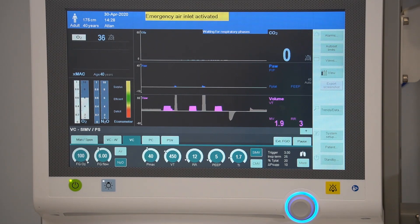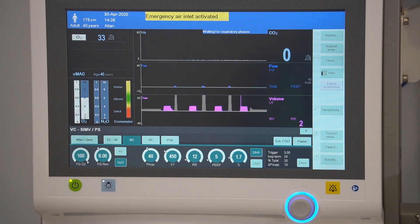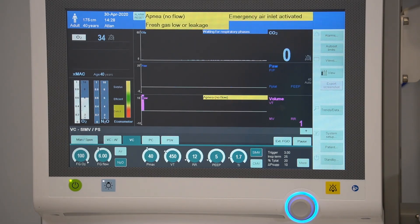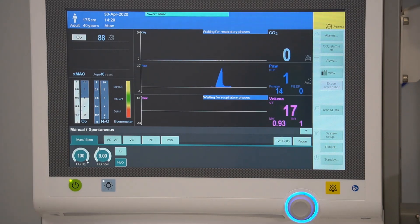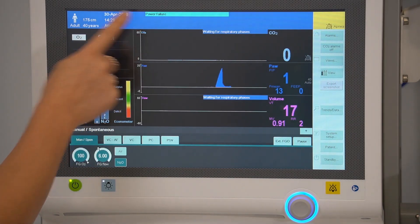Medium priority messages will flash in yellow. These are cautionary messages that require immediate attention. Advisory or technical messages will be displayed in blue.